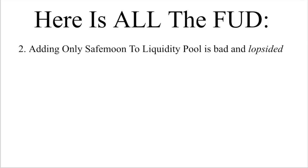Number two: I keep hearing the term lopsided liquidity thrown around, especially from FUD social media accounts. What they mean is that when swap and liquefy is called, only extra SafeMoon is put into the liquidity pool because the BNB added is not external or new — it came directly from that same pool. What these FUD actors are saying is that adding extra SafeMoon to the liquidity pool without new BNB is exactly like a sell order: putting extra SafeMoon in the pool lowers its ratio to BNB and therefore its price. The difference is that with a sell order, BNB would be removed — in SafeMoon's case, no BNB is removed; only SafeMoon is added.